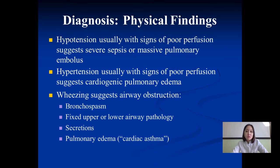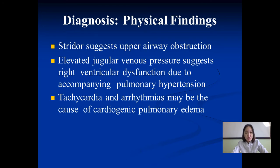Diagnosis and physical findings: hypotension with signs of poor perfusion suggests severe sepsis or massive pulmonary embolus. Wheeze suggests airway obstruction, bronchospasm, fixed upper or lower airway pathology, secretions, pulmonary edema, or cardiac asthma. Upper airway obstruction treatment should also be considered. Elevated jugular venous pressure suggests right ventricular dysfunction due to combined pulmonary hypertension. Tachycardia and arrhythmia may be the cause of cardiac pulmonary edema.